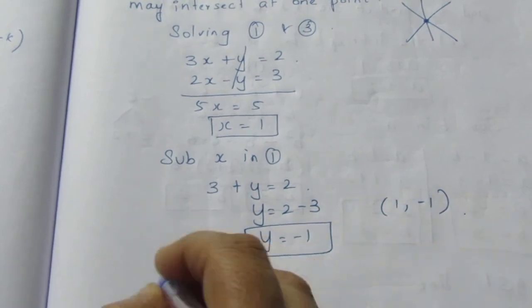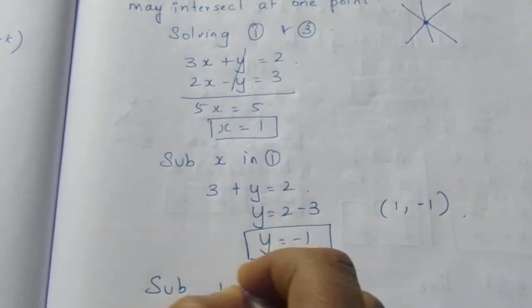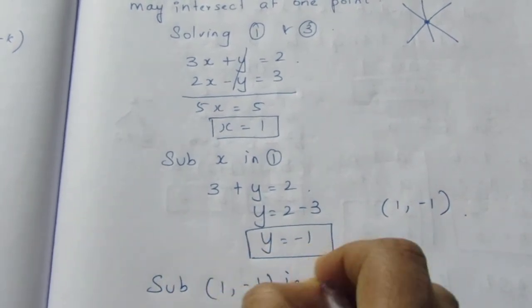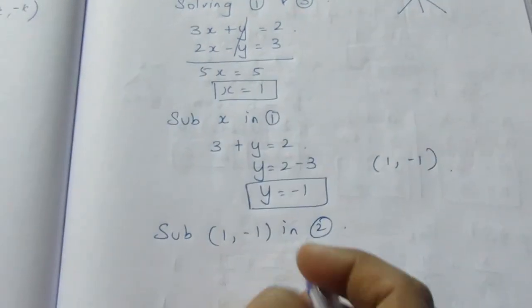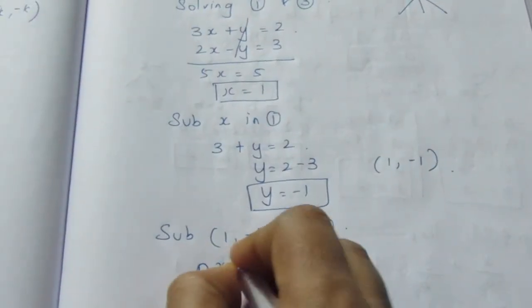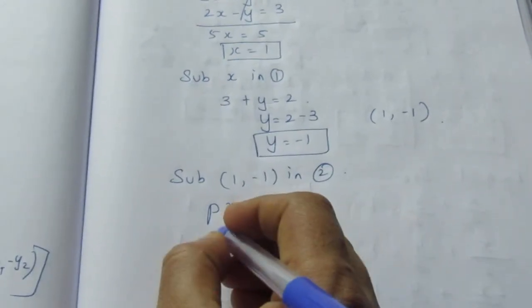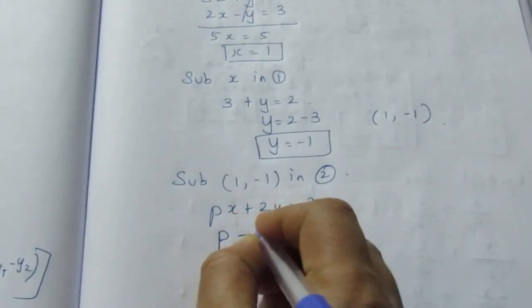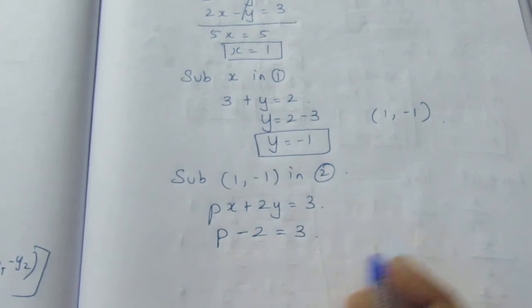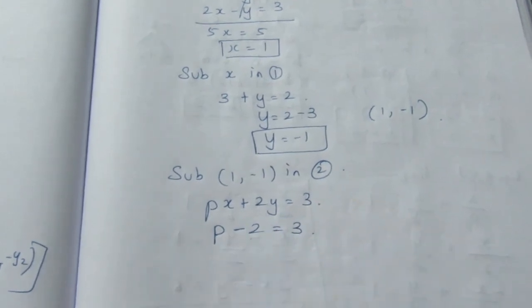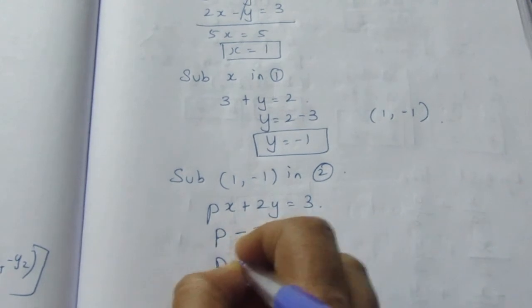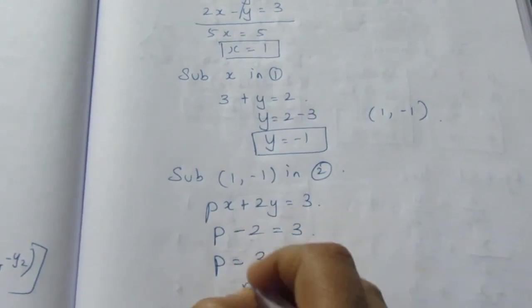Substitute (1, -1) into equation 2. The equation is px + 2y = 3. Substituting x = 1 and y = -1, we get p(1) + 2(-1) = 3. Minus 1 times 2 becomes minus 2, so p - 2 = 3. Therefore, p = 3 + 2, p = 5.